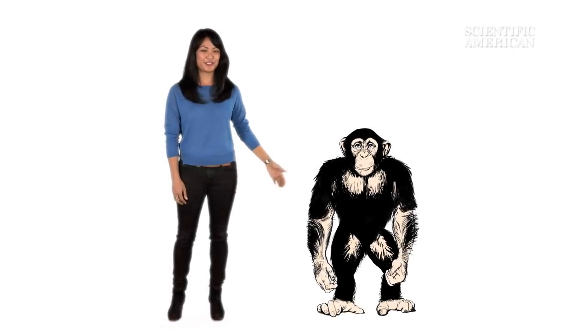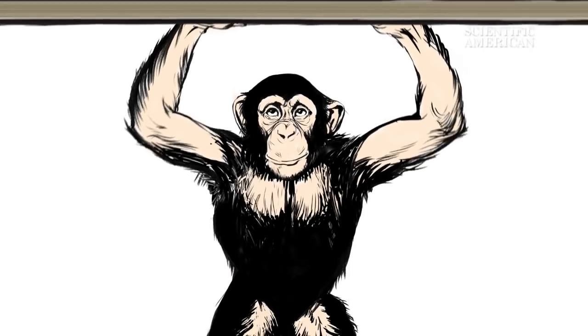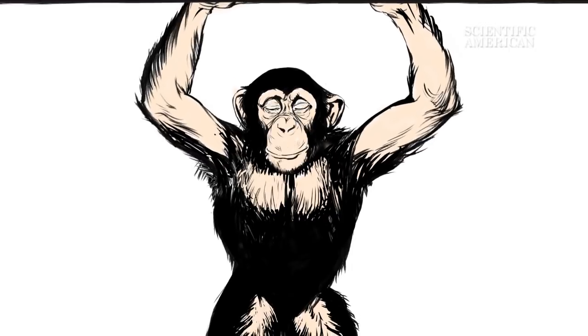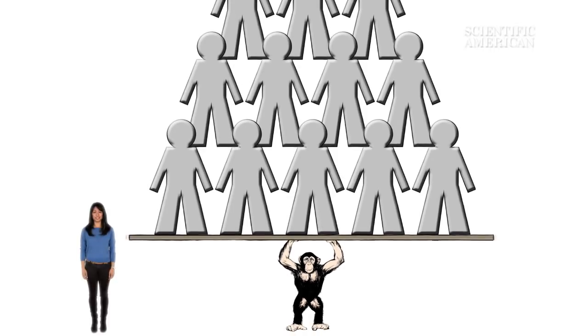Chimps can be three to five times stronger than humans. That means a really strong chimp could, in theory, lift about 16 people over its head.